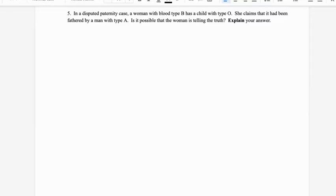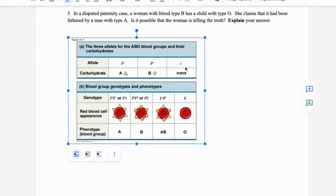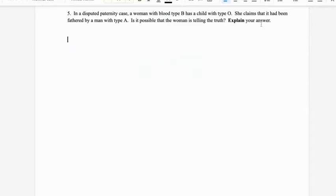All right, so here we go. Let's talk about the genetics of this then. In a disputed paternity case, a woman with type B blood has a child with type O blood. She claims that it had been fathered by a man with type A. Is that possible? Is this really the daddy? Explain your answer.